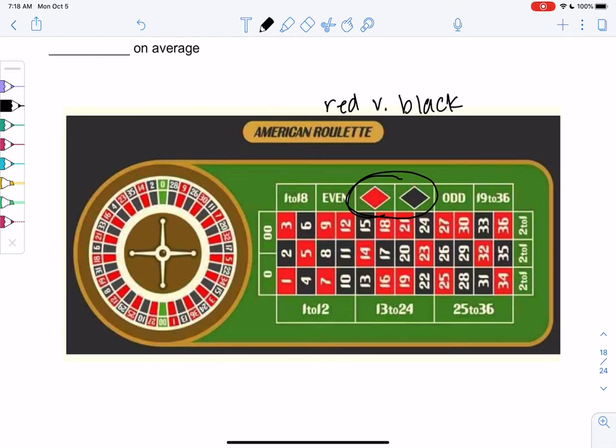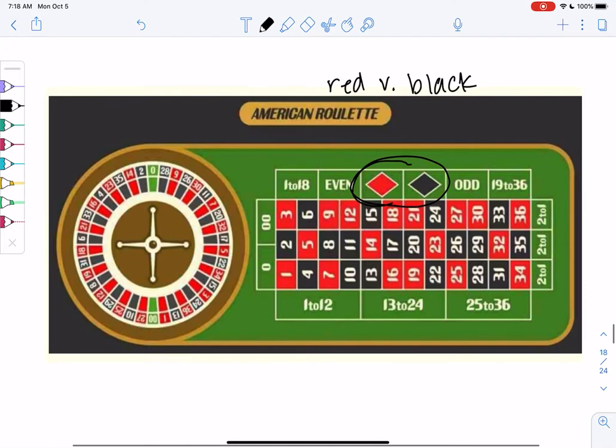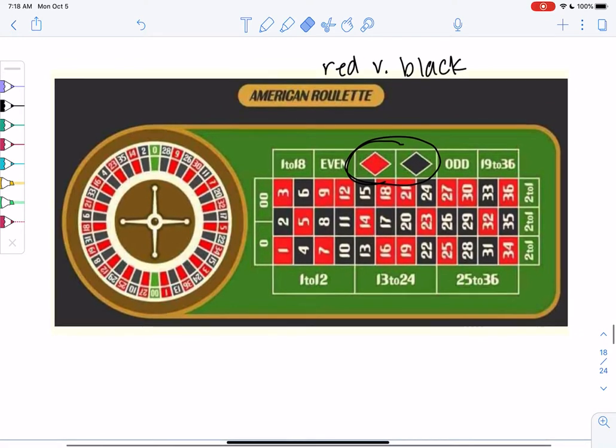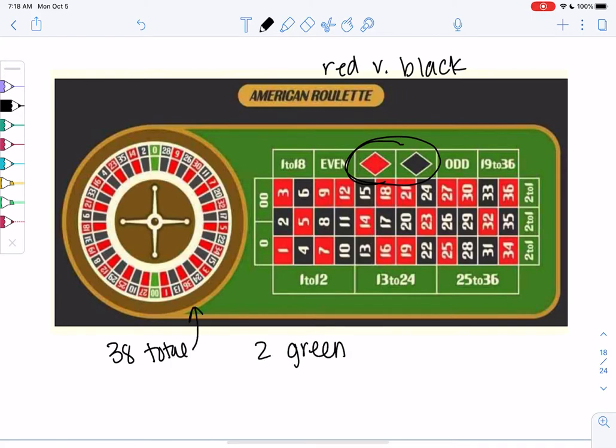And they pay you. So if you bet a dollar, they pay you a dollar. If you bet five dollars, they pay you five dollars if you win. So the issue though, the way the casino wins the money is with these two green ones if you don't notice them. And that's what makes the odds no longer 50-50. So it kind of messes everything up for you as the gambler. But it helps the casino. So there's 38 total numbers on this wheel. Two of them are green. And if you were to count, red and black have 18 each.